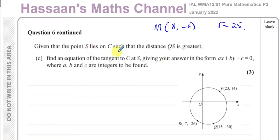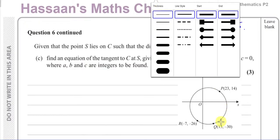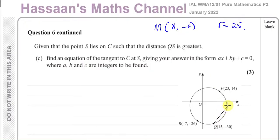So what does it mean by the point S lies on the circle C? It means it's somewhere on the circumference and it says such that the QS is the greatest. Now for QS to be the greatest possible value, then S must be basically at a point where QS is the diameter of the circle. If it is such that S is as far away from Q as possible, then QS must be the diameter because S lies on the circle, Q lies on the circle, the greatest distance between Q and S is going to be the diameter of the circle.